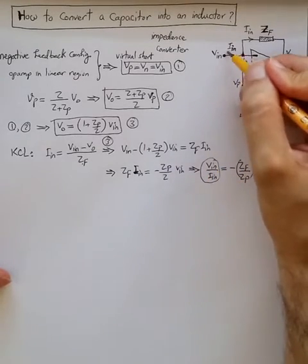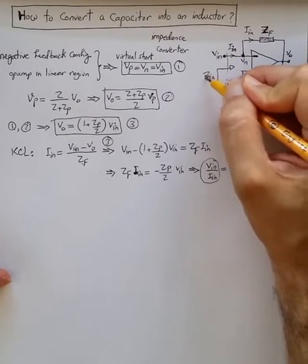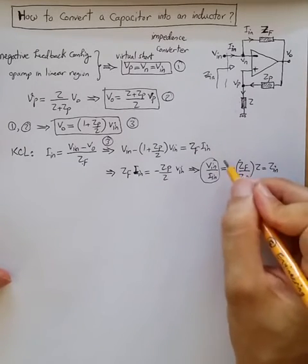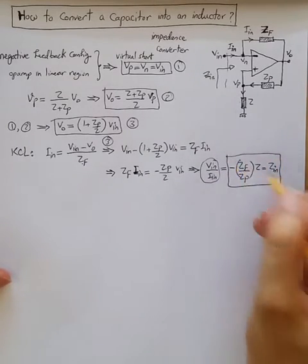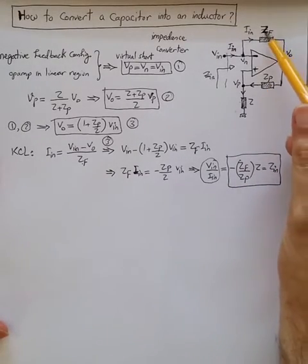VN divided by IN is the impedance observed by VIN. That's the ZN. So input impedance has this relationship with ZF, ZP, and Z.